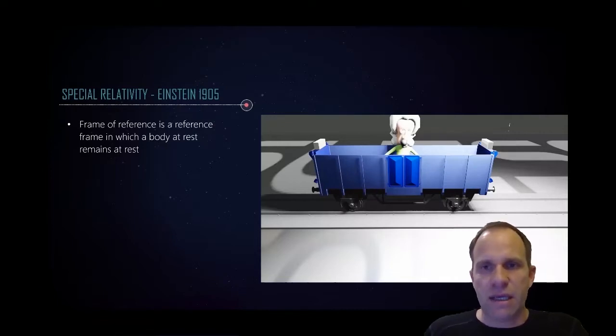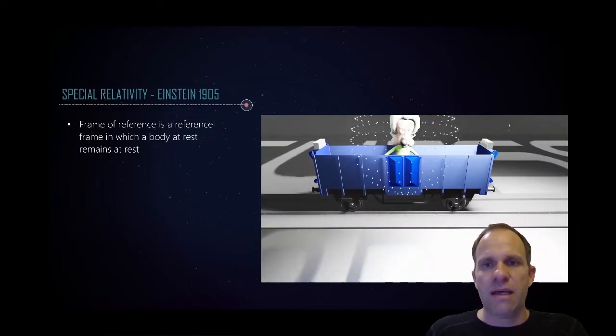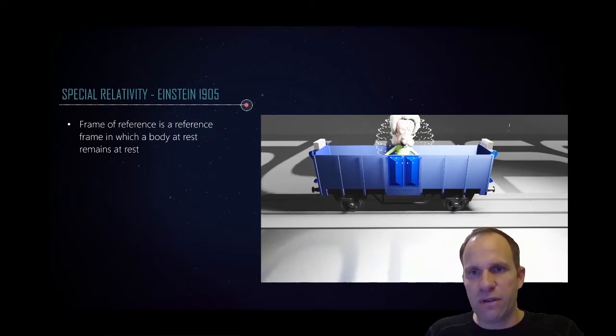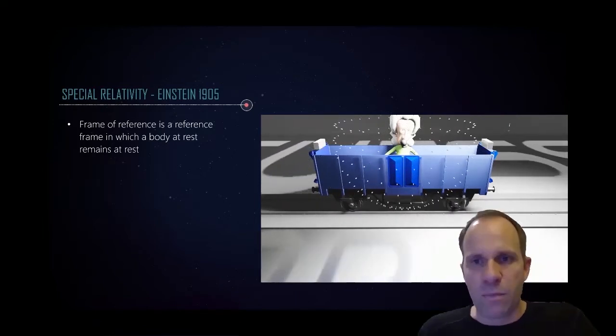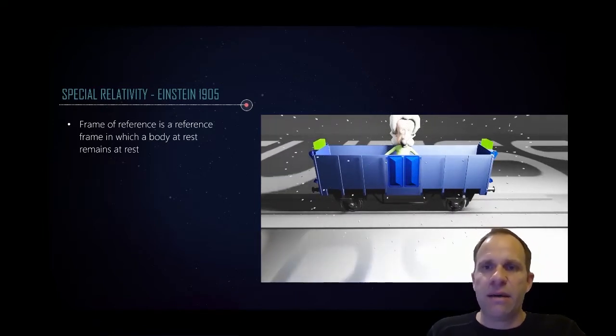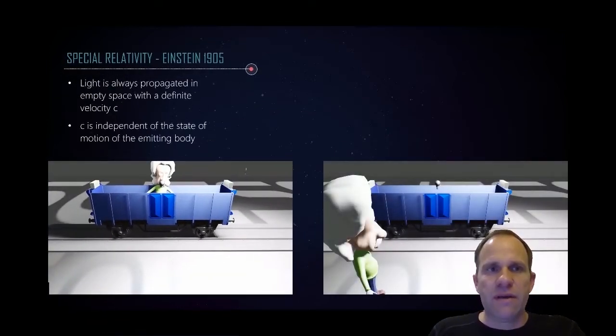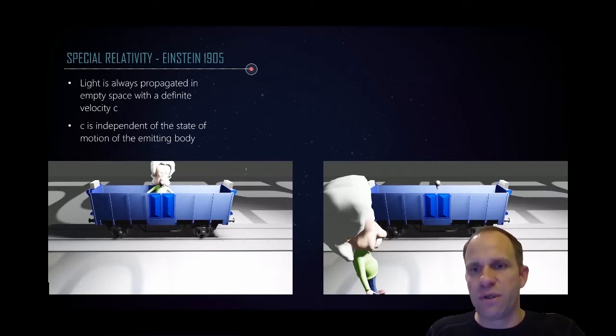If Albert Einstein emits a light burst, he will observe exactly the same as Galileo Galilei. The light burst will still hit the front of the train and the back at the same time. But Einstein postulated an amazing thing. He postulated that light is always propagating in empty space with a definite velocity, and this is independent of the state of the motion of the emitting body. And this is now the central point of the theory of relativity.